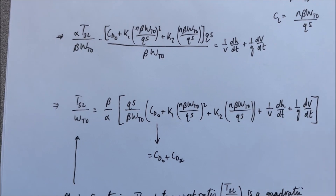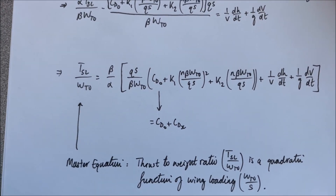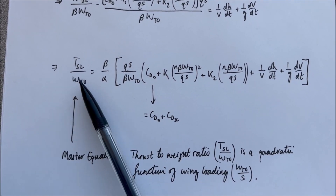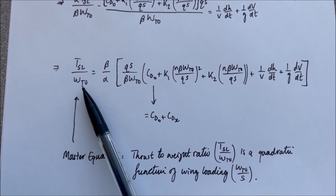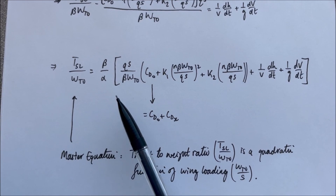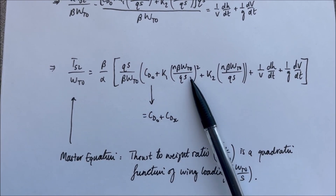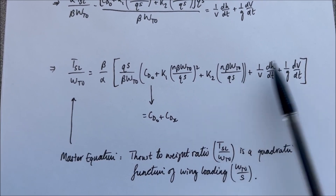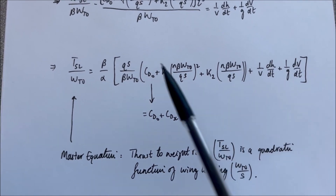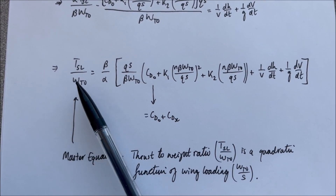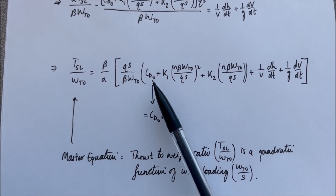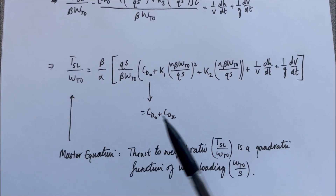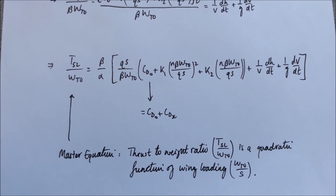The final step also includes the option to expand the parasite drag coefficient into the clean configuration term CD0 plus the excess parasite drag CDx for external stores. Essentially the left-hand side is the thrust-to-weight ratio T_SL/W_TO, and the right-hand side is a quadratic in wing loading W_TO/S — a squared term plus a linear term plus a constant — of the form y = ax² + bx + c. When plotted on a constraint diagram, this master equation appears as a quadratic curve.